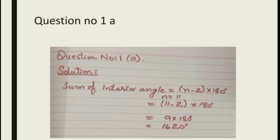Part number one is 11 gons. 11 gons means n is equal to 11. Now our formula is sum of interior angle is equal to (n minus 2) multiplied by 180. N is equal to 11, which is given in the question. We are going to put the value of n in the formula.